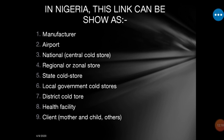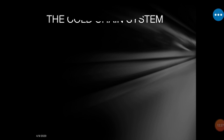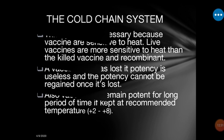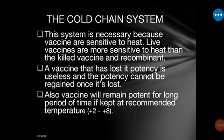The cold chain system is necessary because vaccines are sensitive to heat. This simply means if vaccines are not stored at a good temperature, they are very susceptible to heat damage. If damaged, the microorganisms used in the vaccine cannot survive and that vaccine is going to be useless.